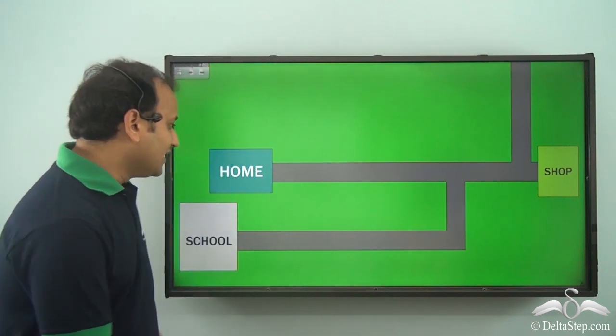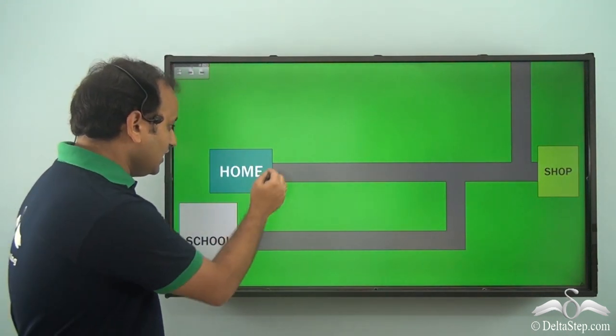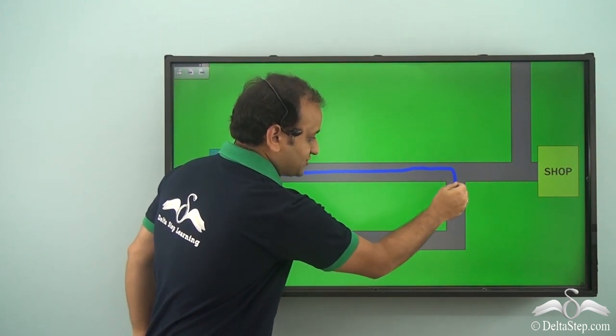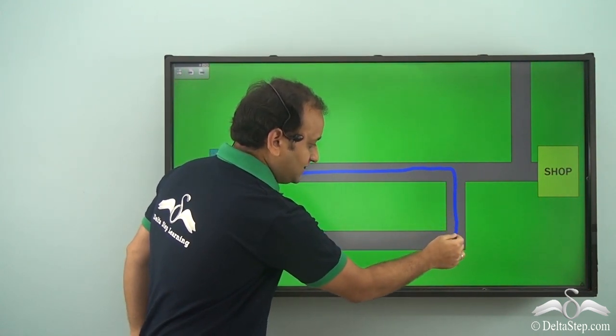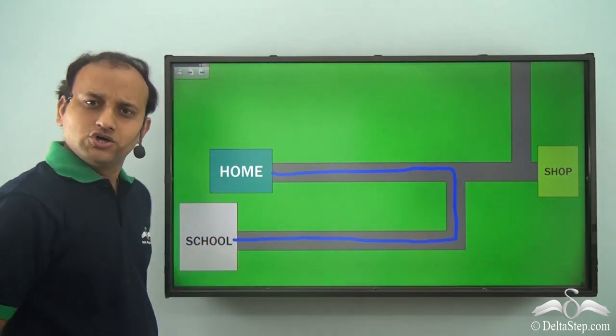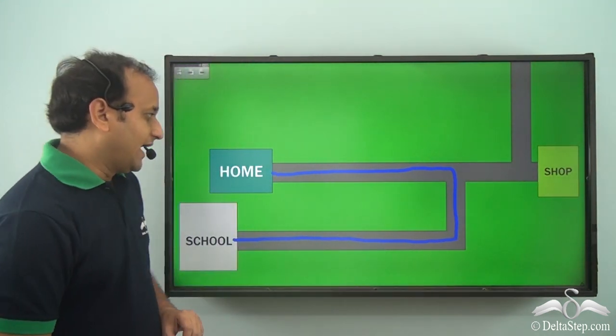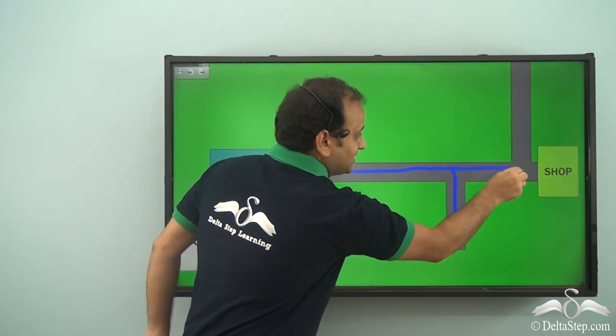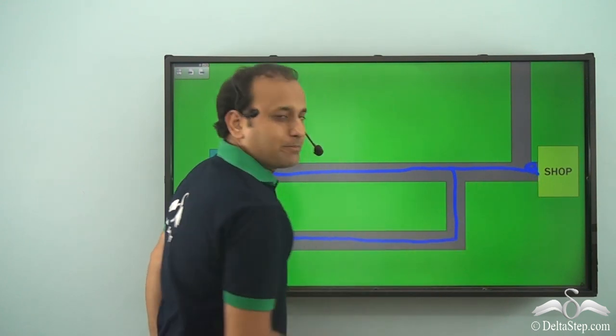Samir goes to his school from his home every day following this path. He goes from his home like this, then takes a right and then takes a right again and reaches his school. If he doesn't take a right here and goes straight, then he would reach the shop.